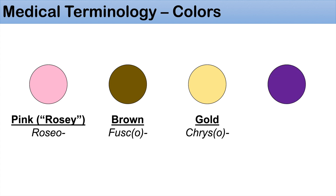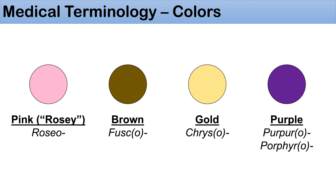The next color is purple, denoted by a couple of different prefixes. The first one is purpuro — you can think of purple and purpuro, since pur appears in both. The next one is porforo; think of P for purple, P for porforo, to help you remember. Some examples of words containing these prefixes include purpura or porphyria.